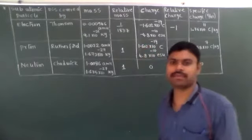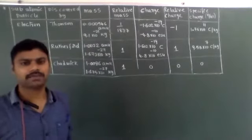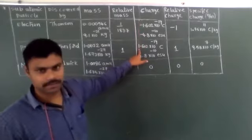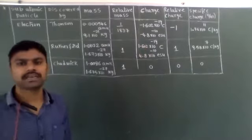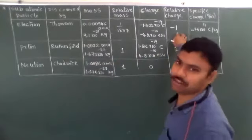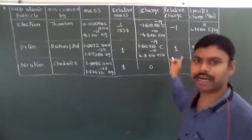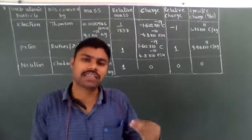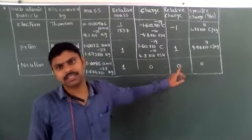For protons - they are positively charged particles. So the charge is +1.602 × 10⁻¹⁹ Coulombs. The relative charge of electrons is −1 and protons is +1. Neutrons are neutral particles and their charge is 0.